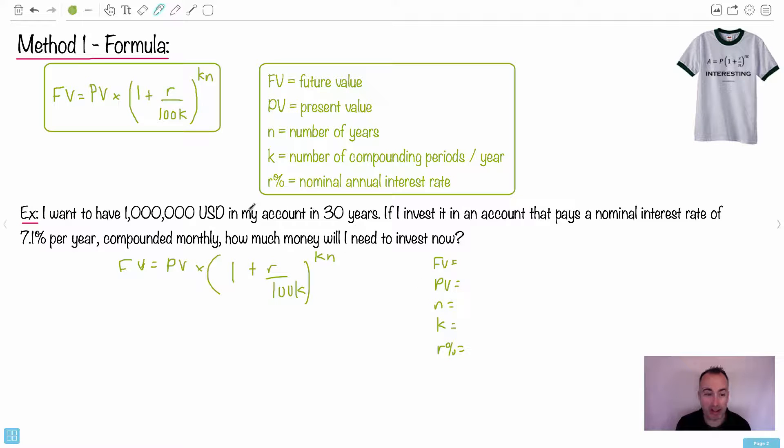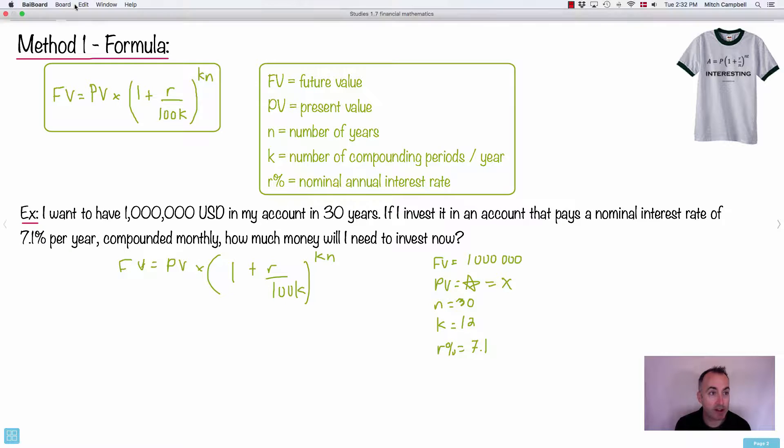It's important then, I think, to try to write down what your different letters are going to be. So what's FV in this case? We need to know what's PV, what's N, what's K, and what's R. If we figure out these, we know what to put in. I like to do it this way so it's easier. If I want to have a million US dollars in 30 years, what is it that million is? It's future value. So that's my million here. Six zeros. Present value - how much money do I need to invest now? That's actually what I want. So I'm going to just call that X. It's the thing I'm looking for. Then I have N, the number of years. That's going to be 30. K is the compounding periods per year. It's compounded monthly. If it's monthly, it's done 12 times per year. And the annual interest rate is 7.1 percent.